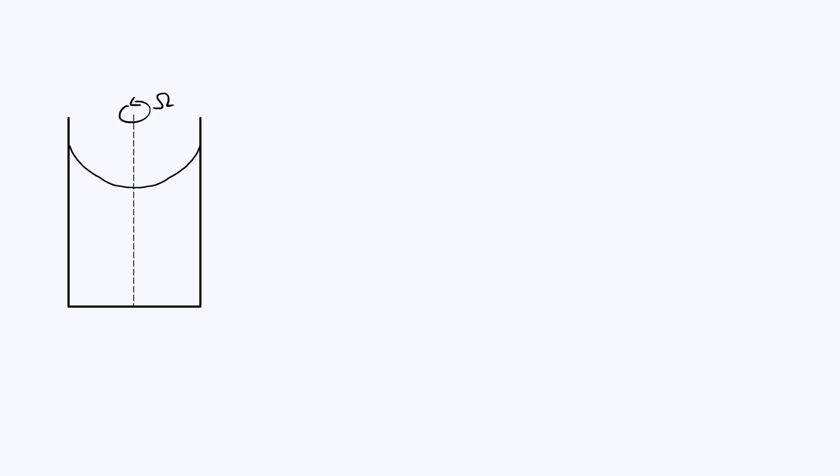Now we know it can't just be flat, it has to look something like what I've drawn in the diagram here. You can understand that just by noting that from the perspective of an individual liquid molecule or particle, it's in a rotating frame, and so it's going to be feeling some outwards fictitious centrifugal force, so the liquid tends to be pushed outwards towards the walls of the container.